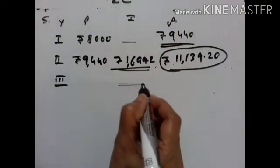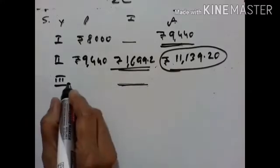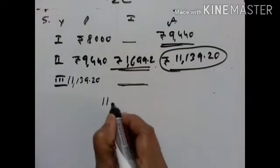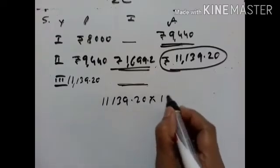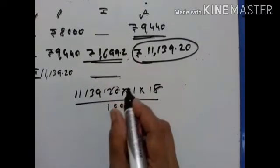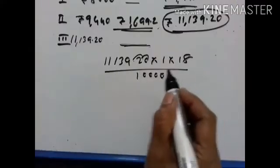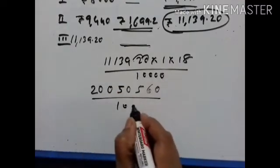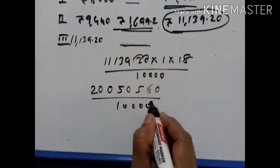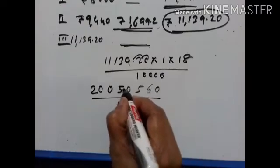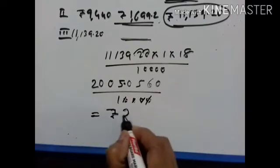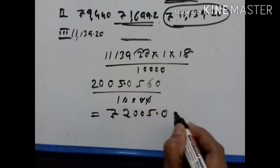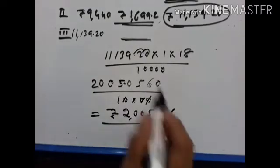Next we have to find the interest accrued in the 3rd year. Rs. 11139.20 is the principal of the 3rd year. P × T × R upon 100. When we multiply 11139.20 by 18 and divide by 100, we get Rs. 2005. We round up by 1 because the decimal is more than 5. So this is the interest accrued in the 3rd year.